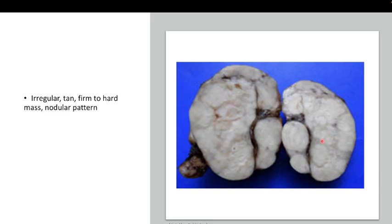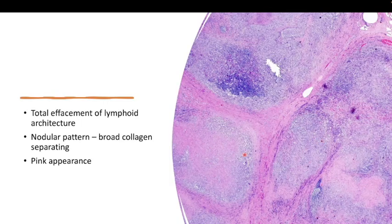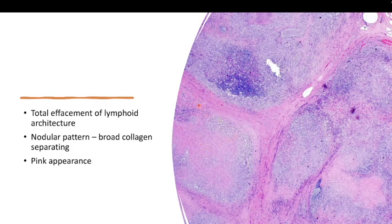When you slice it and send for histopathological analysis, you can see there is a total effacement of the lymphoid architecture. You cannot see the well-formed lymphoid follicles containing tingible body macrophages rimmed by mantle zone — all of it is already effaced by this tumor. The tumor is arranged in a nodular pattern; you can see small and large nodules with areas of necrosis. It is separated by broad collagen septae.